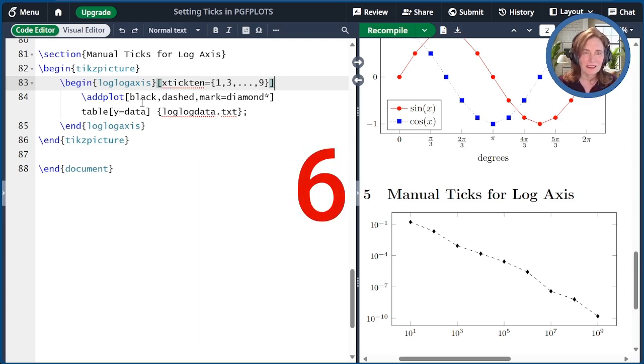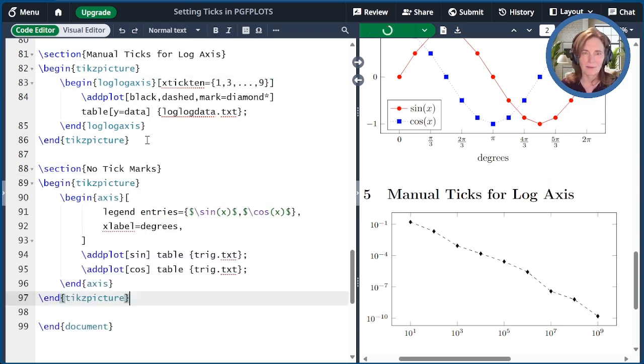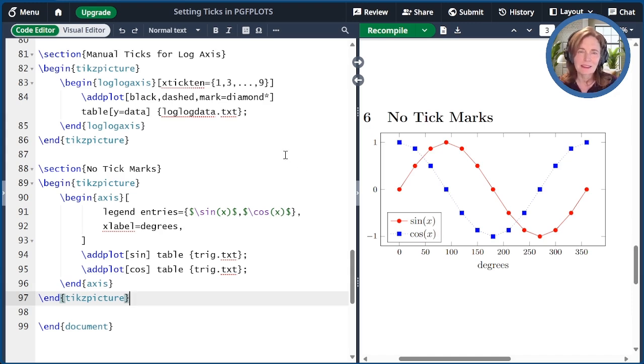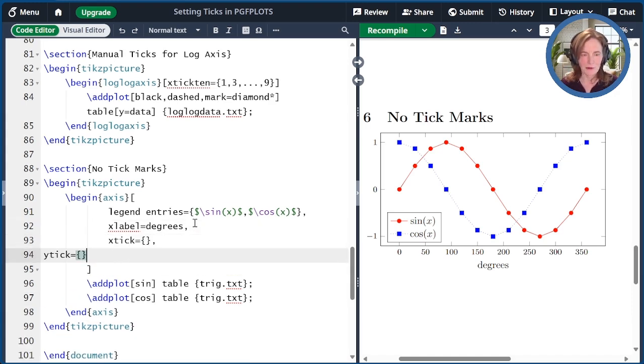The sixth way to set the ticks is to specify no ticks at all. Let's look at how you might do that. I'll start again with our sine and cosine plot. The natural way you might think to do this is to say, for example, x tick equals empty, y tick equals empty. So let's see what happens when we do that. When I compile it, it actually doesn't change at all.